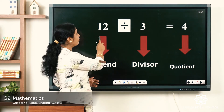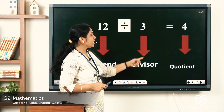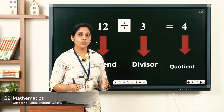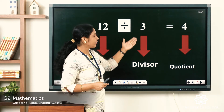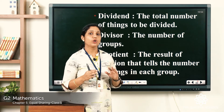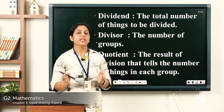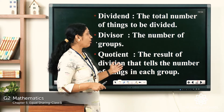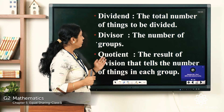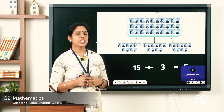So: 12 divided by 3 equals 4. Here 12 is the dividend, 3 is the divisor, and 4 is the quotient. In division, we call the answer the quotient. The dividend is the total number of things to be divided and is written first. The divisor is the number of groups. The quotient is the result of division — it tells us the number of things in each group.